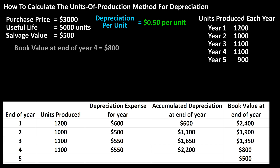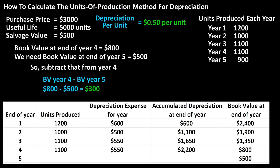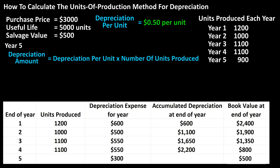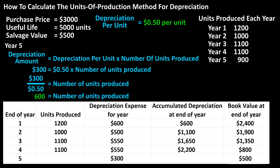To do this, we look at the book value at the end of the previous year — year four — which is $800. We need the book value at the end of year five to be $500, so we subtract: $800 minus $500 equals $300. So the depreciation expense needs to be $300 for year five. Using the formula — depreciation amount equals depreciation per unit times units produced — there were 900 units produced in year five, but we can't claim all of them, as that would bring the book value below the $500 salvage value. Solving for units produced: $300 equals $0.50 times units produced, giving us units produced equals 600.